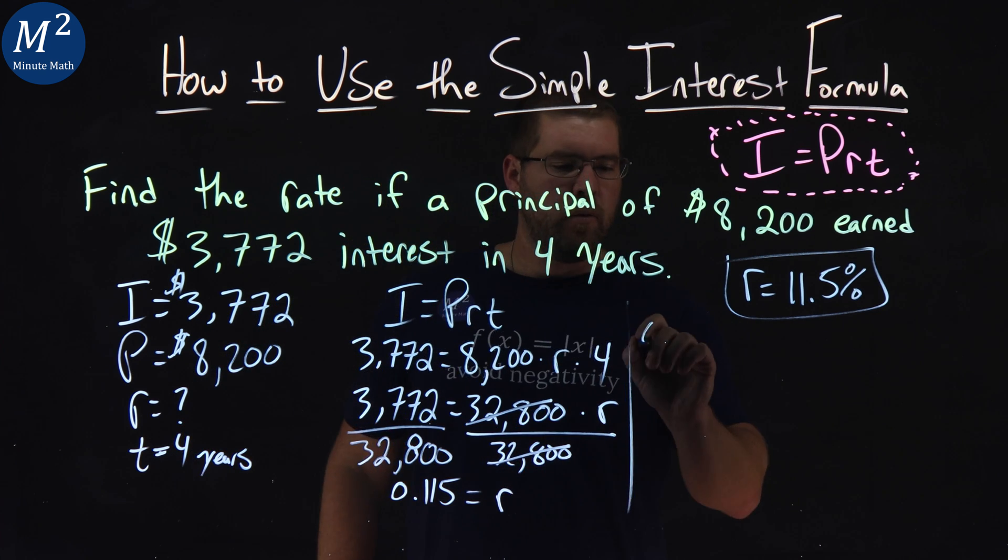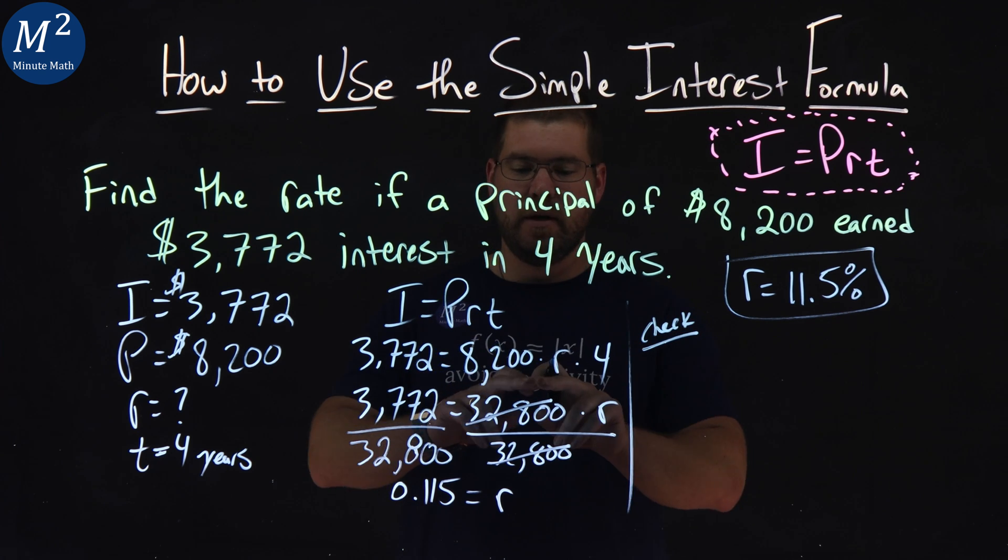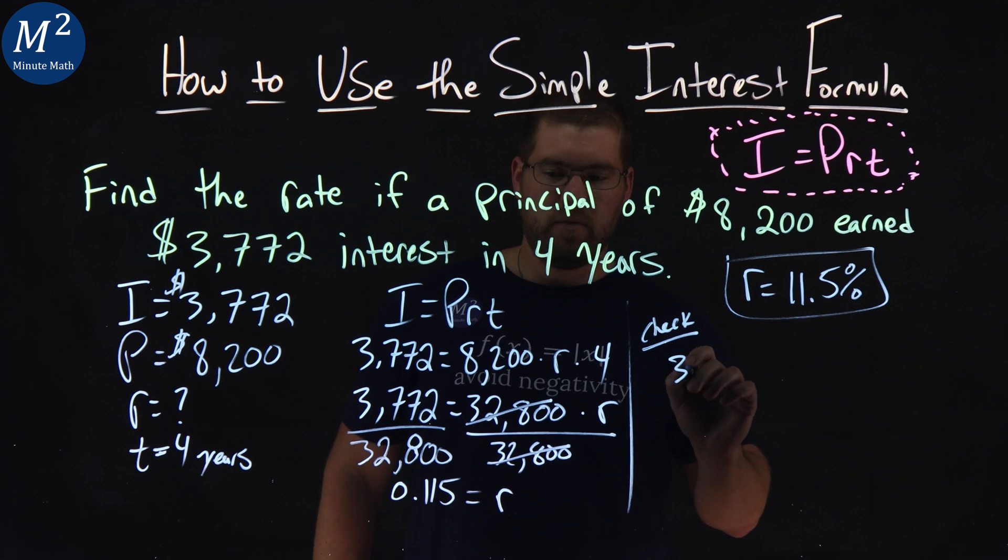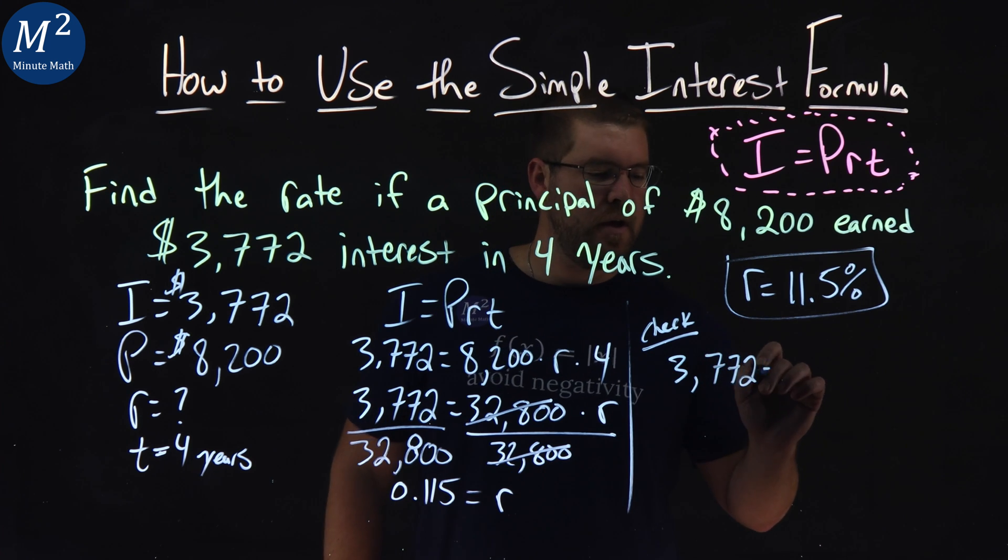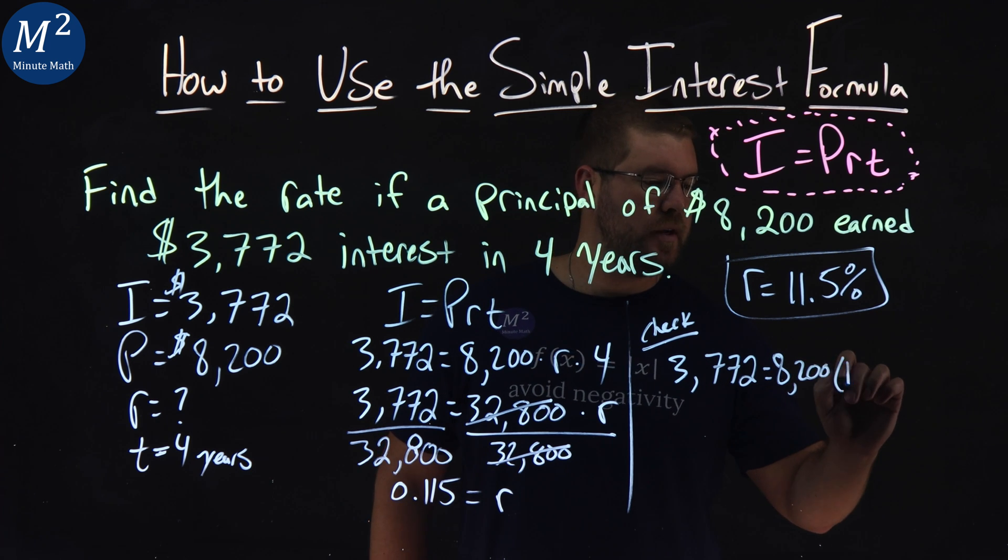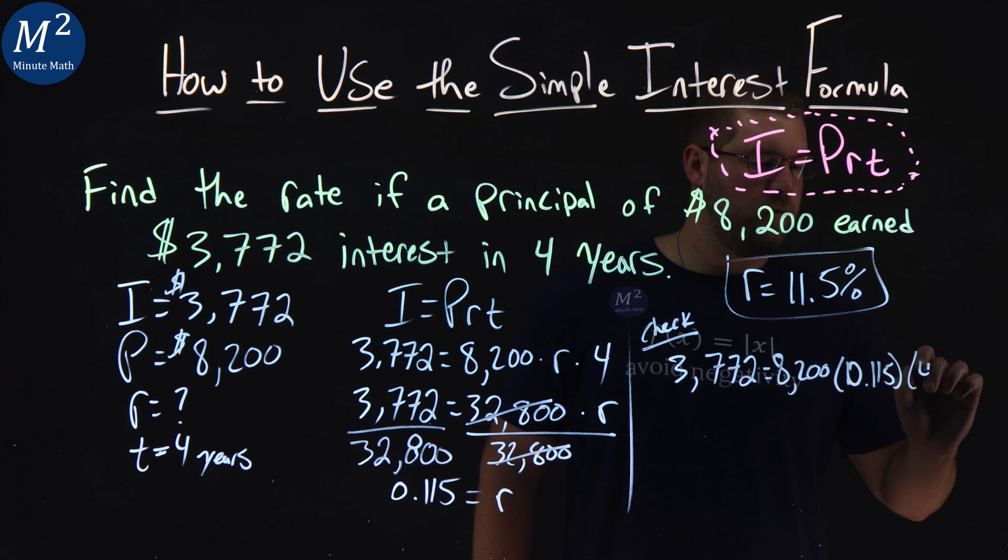What we want to do is rewrite our problem here. Instead of R, we're going to put the 11.5%, so $3,772. Does that equal $8,200 times an interest rate of 0.115 as a decimal times the time of four years?